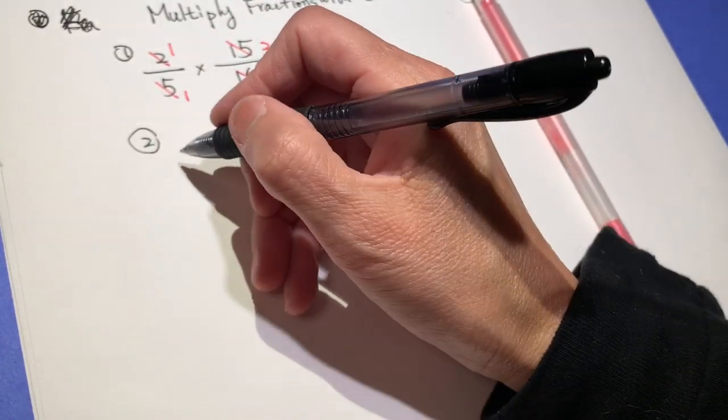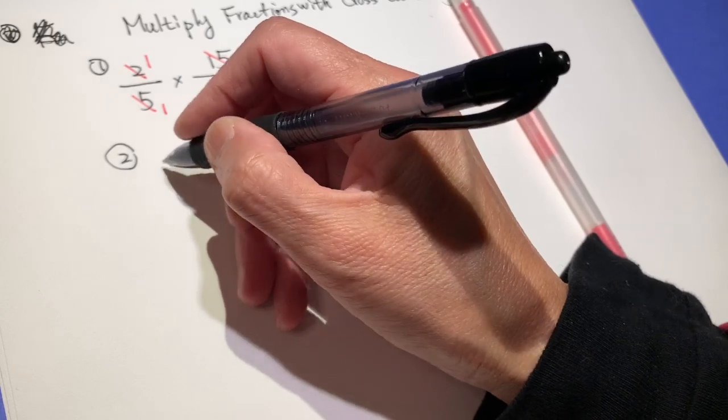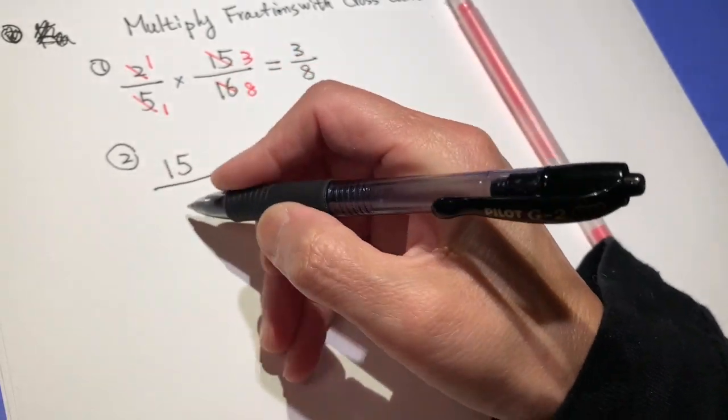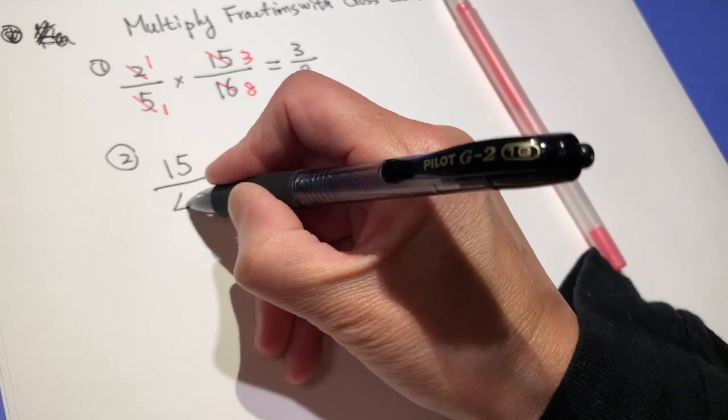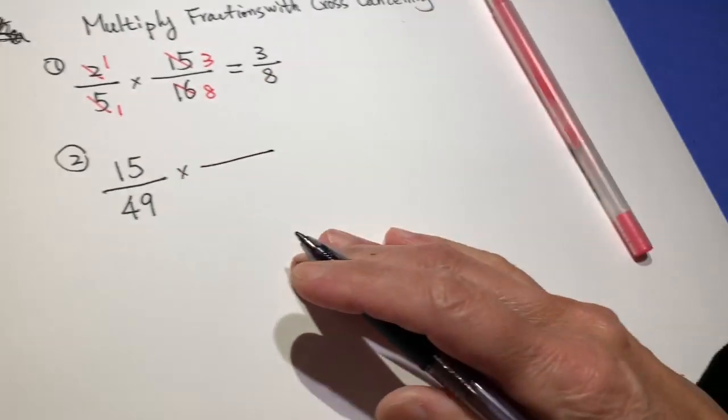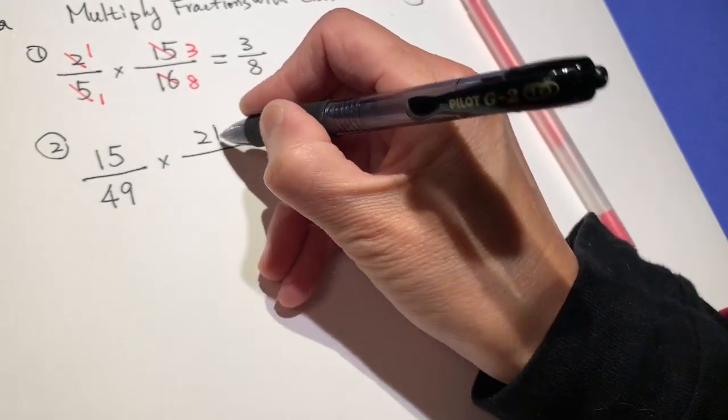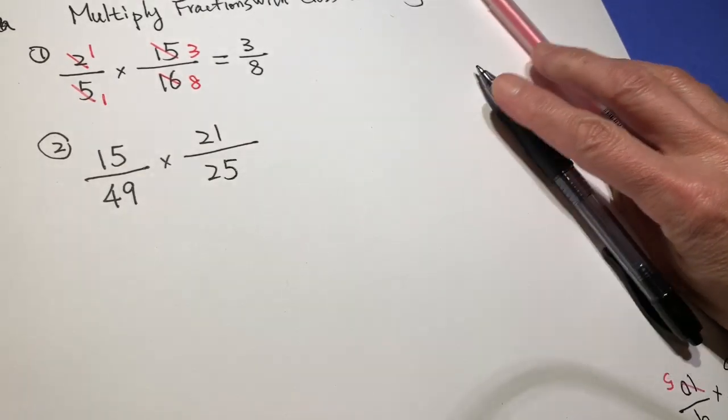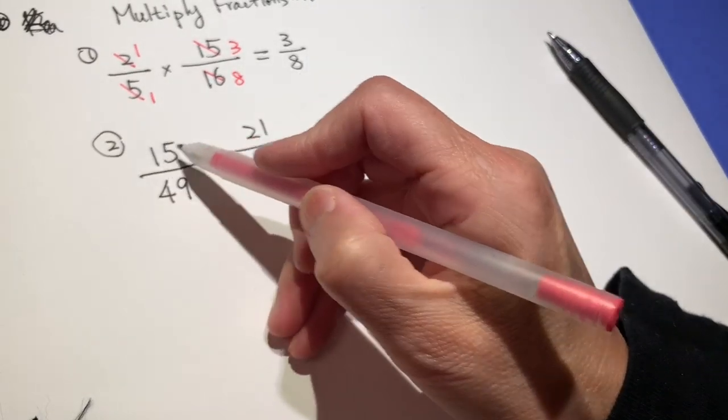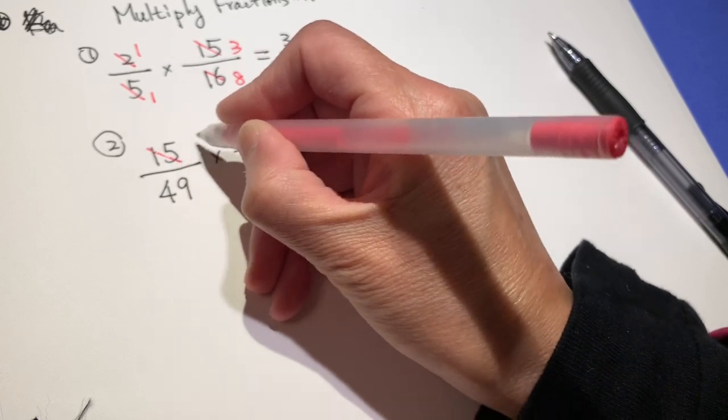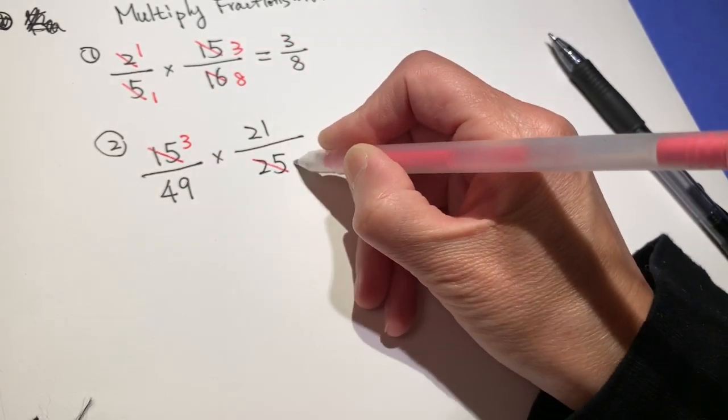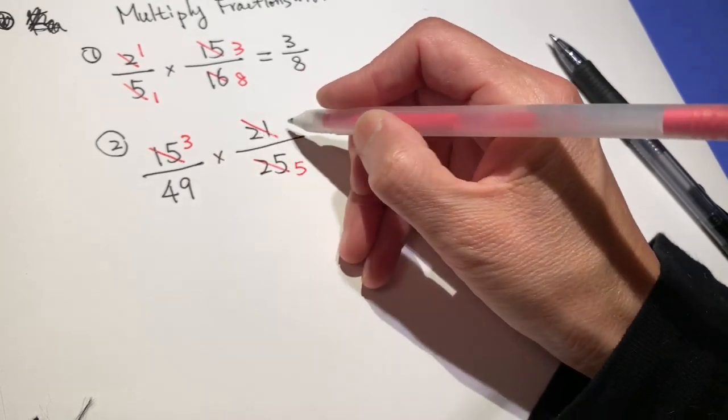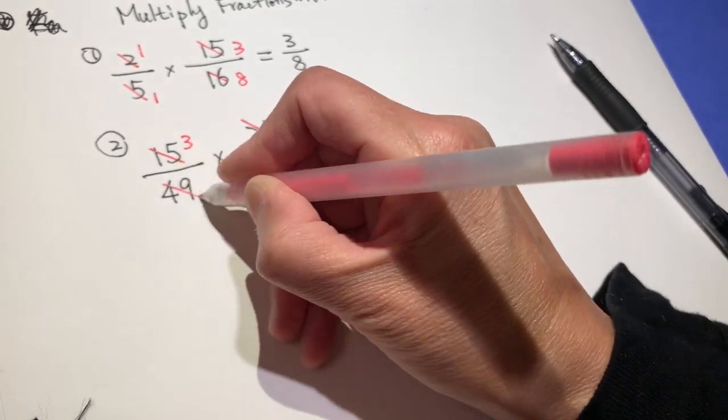Question number 2, we will do 15 over 49 times 21 over 25. Let's see. Both divided by 5: 3, 5. Both divided by 7: 3, 7.